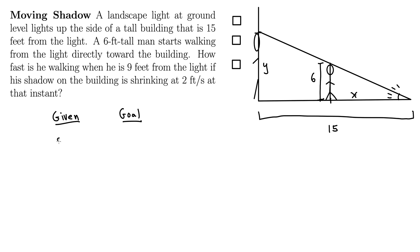And what it says is we have dy/dt at a certain instant, at the instant when X equals 9. At that moment, dy/dt is negative 2 feet per second. And our goal is how fast is he walking? So how about dx/dt when X equals 9? There's our goal.